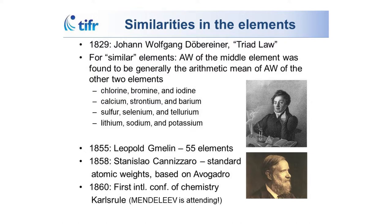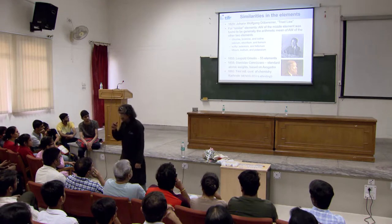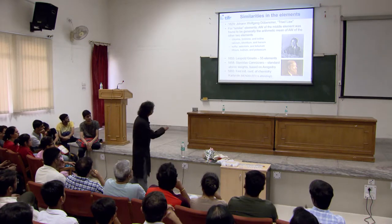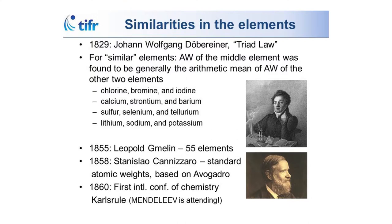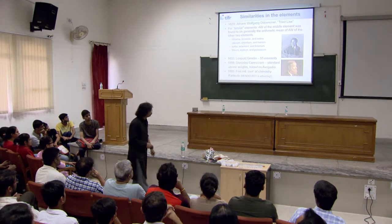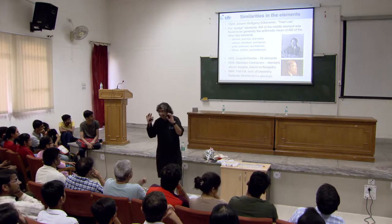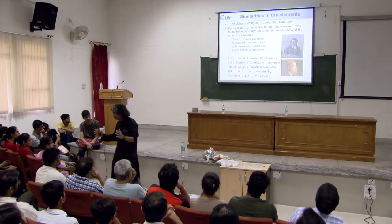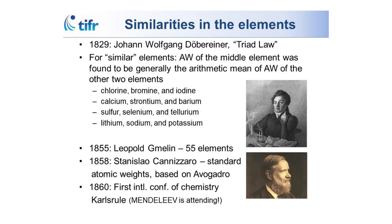Then Gmelin, who has his handbook of chemistry, has 55 elements. An important thing is accurate measurements of atomic weights, first done by the Italian chemist Cannizzaro. If you've done organic chemistry, you may have heard of Cannizzaro's reaction. He also worked on finding atomic weights based on another Italian chemist — Avogadro. These guys present their findings at the first international conference of chemistry at Karlsruhe, and one of the attendees in the audience is Dmitri Mendeleev.